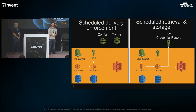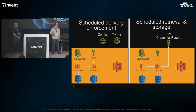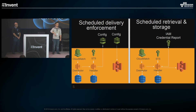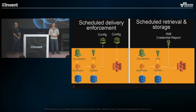For scheduled retrieval and storage — like for Trusted Advisor and IAM credential reports — the first part looks similar: distributor function gets the role, passes to a handler function, retrieves temporary credentials. But then it generates the report, polls to make sure the report is finished, retrieves it, and stores it into S3 rather than waiting for the service to deliver it to S3 itself.